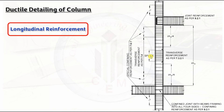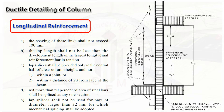The splice shall be provided only in the center half of the clear column height and not within a joint or within a distance of 2D from the face of the beam, because bending moment is least at the column center. Not more than 50 percent of the area of steel bars shall be spliced at one section. As shown, splices are at the center half, link spacing does not exceed 100 mm, and bars larger than 32 mm require mechanical splicing.